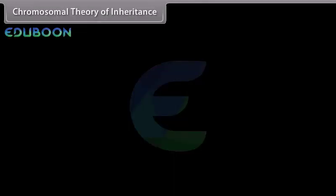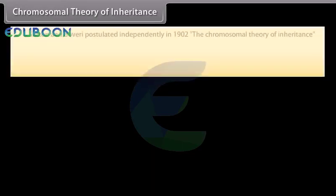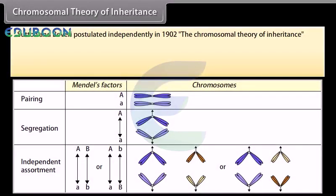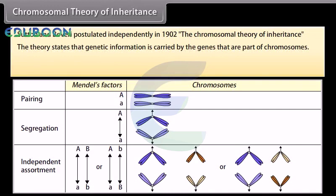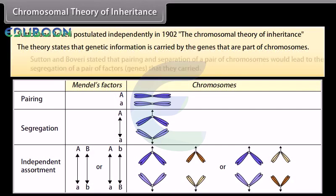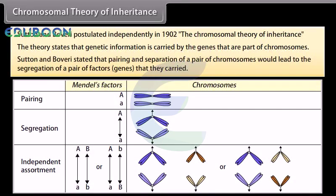Sutton and Boveri postulated independently in 1902 the chromosomal theory of inheritance. The theory states that genetic information is carried by genes that are part of chromosomes. Sutton and Boveri stated that pairing and separation of a pair of chromosomes would lead to the segregation of a pair of factors — that is, the genes that they carried.